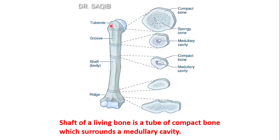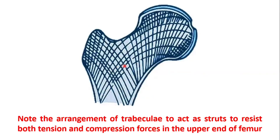Here you can see the shaft of a long bone. It is a tube of compact bone. Compact bone is on the outside and inside is the spongy bone. Inside is the medullary cavity — the bone marrow. Note the arrangement of the trabeculae to act as struts to resist both tension and compression forces at the upper end of the femur. They follow the lines of stress — these are the trabeculae.